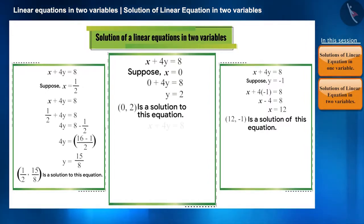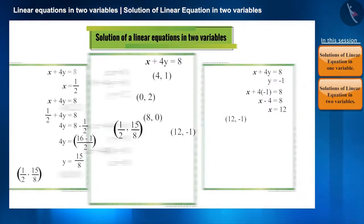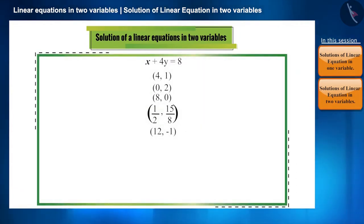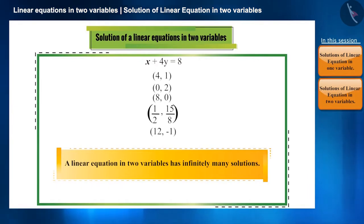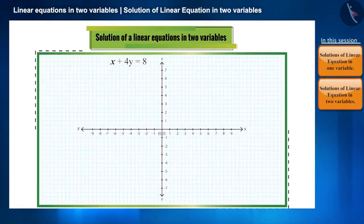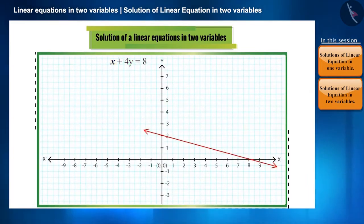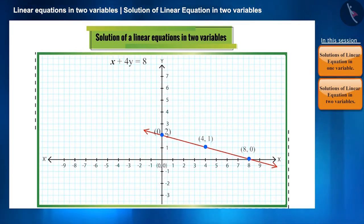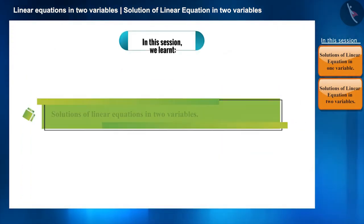To find the solution to the equation, the easiest way is to find the value of y by keeping x as 0, or by keeping y as 0 to find the value of x. There is no limit to the solutions to these equations, so we can say that a linear equation in two variables has infinitely many solutions. Why? Because a linear equation in two variables represents a line, and every point on that line is a solution. A line is made up of infinite points.